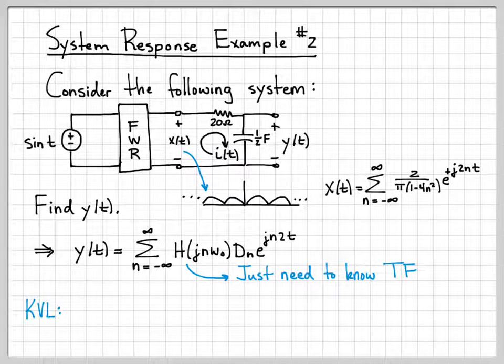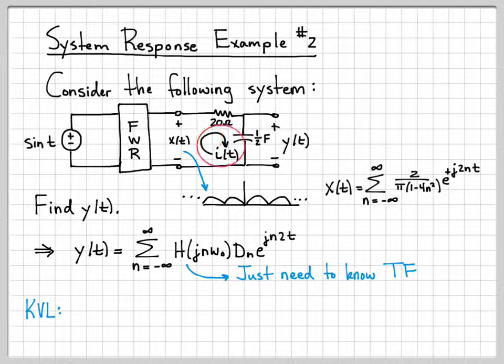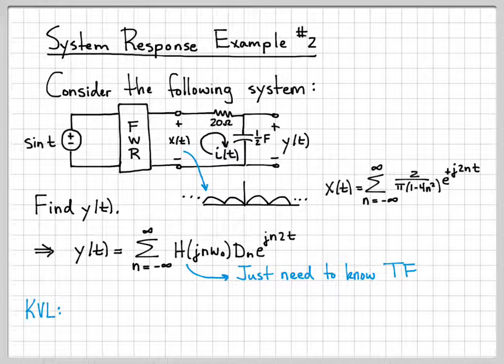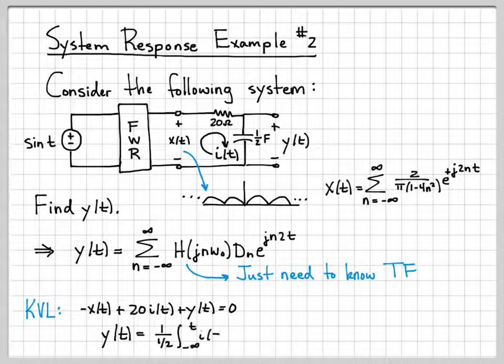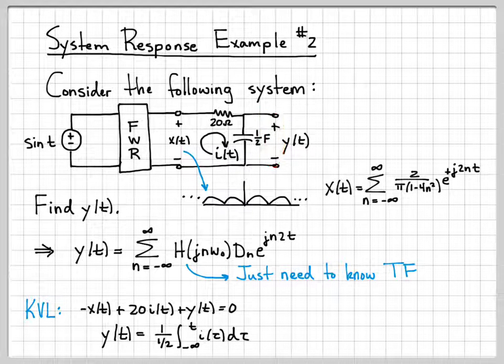So I can do that pretty easily doing a KVL loop. If I do a KVL loop, if I think of this as the current I(t) in that loop, going around, I can write -x(t) + 20·I(t) + the voltage across the capacitor. That completes my loop. So the sum of those voltages has to equal 0.